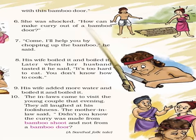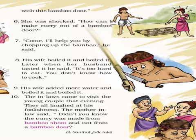The in-laws came to visit the young couple that evening. They all laughed at his foolishness. The mother-in-law said, "Didn't you know the curry was made from bamboo shoot and not from a bamboo door?" So the dish was made of bamboo shoot, not a bamboo door or a tree. The mother-in-law had pointed at the bamboo door meaning to say it was made from bamboo shoot — but he misunderstood. Due to his foolishness, he tried to make a dish using the bamboo door. This was the story of bamboo curry.